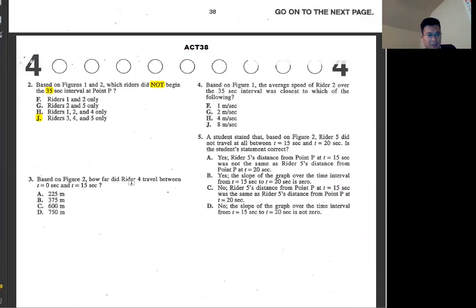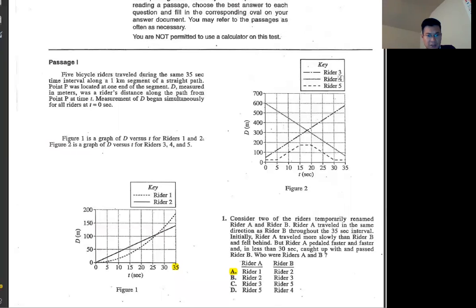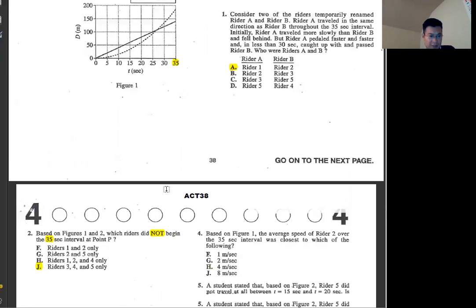Number three, based on figure two, how far did writer four travel between zero to 15 seconds? Four is the small dotted line. It started off at 600 and then ended a little bit lower than 400. So traveling is about 200 something.